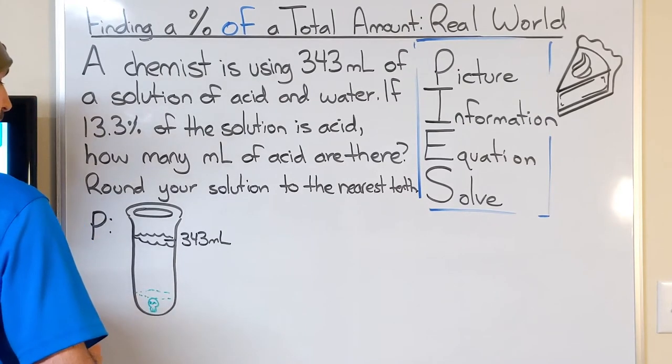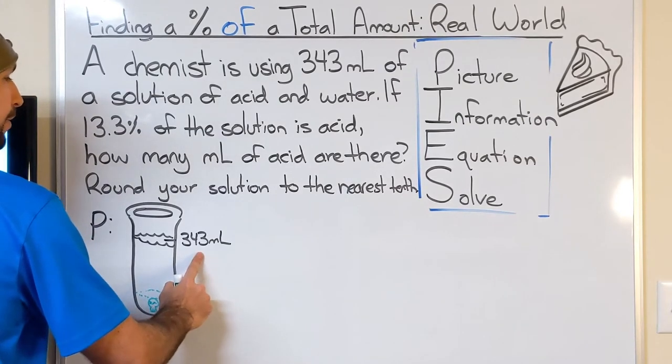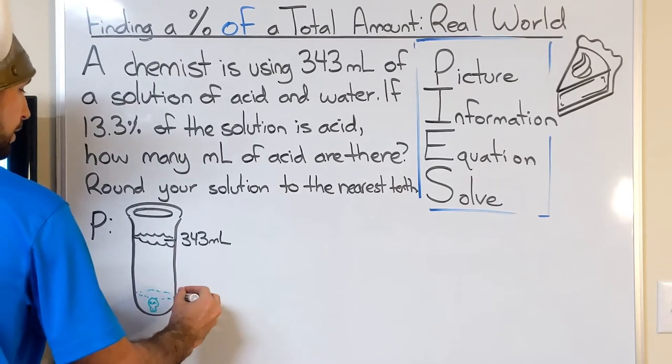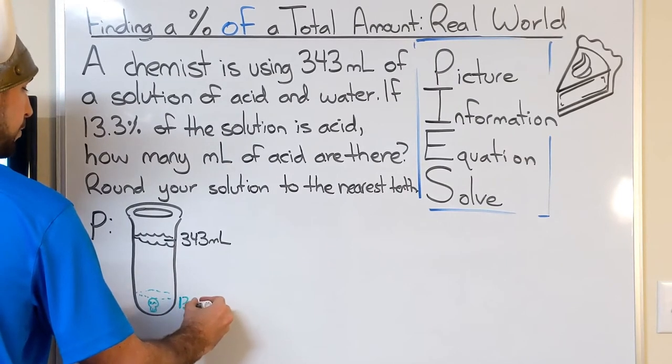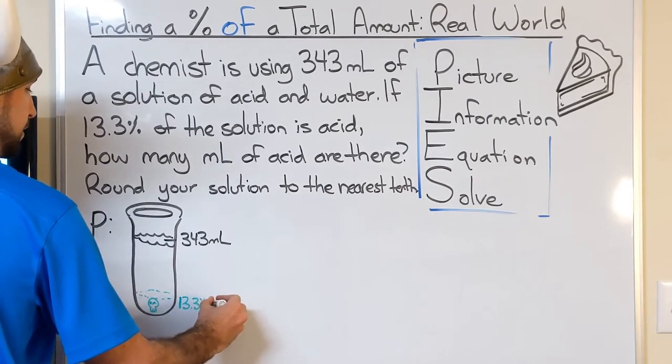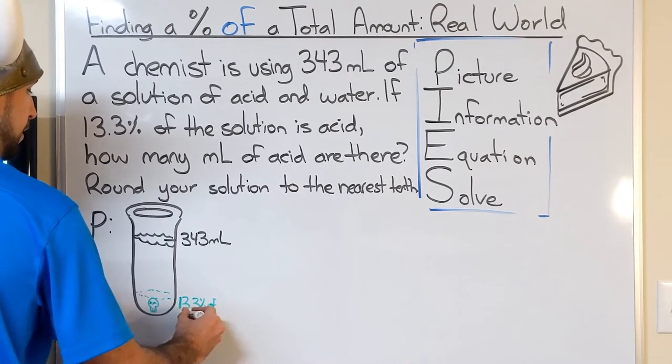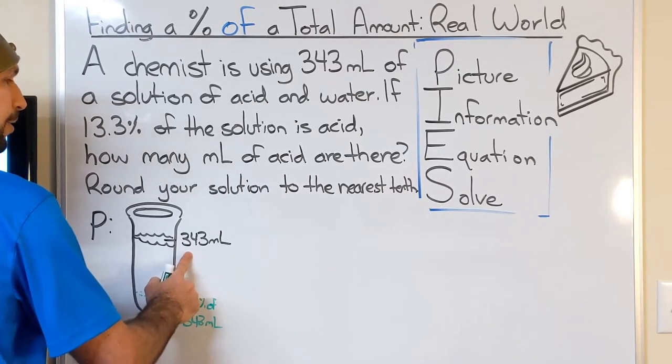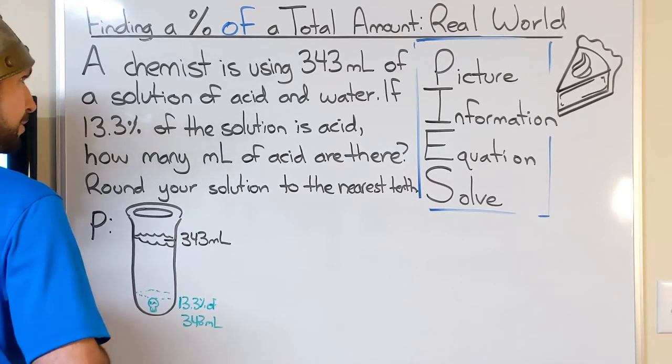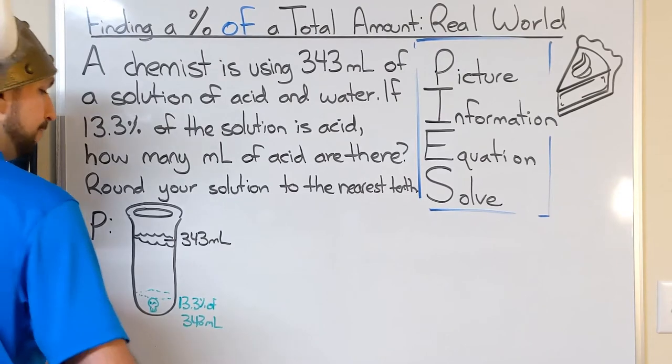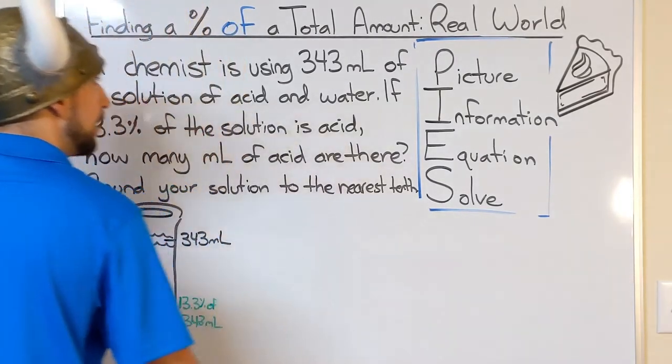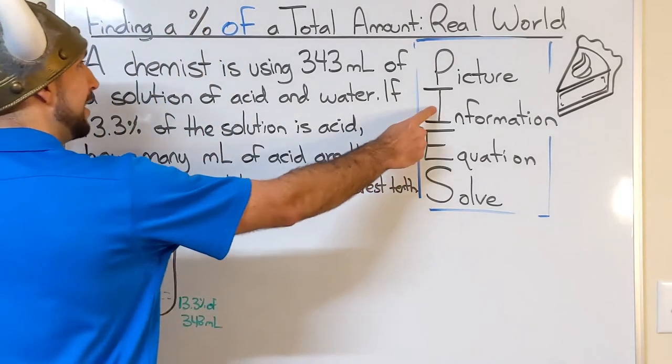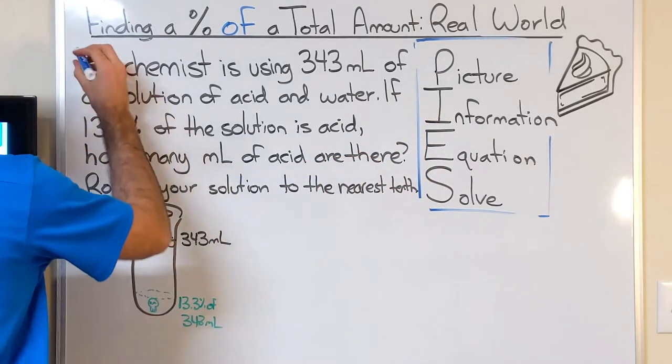So that's the acid. We would expect this to be a much smaller number than 343, because only 13.3% of 343 milliliters, just over 10%. So we're expecting somewhere in the neighborhood of 35 or so milliliters. But let's do the math. Next, we need to highlight important information.